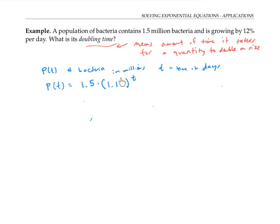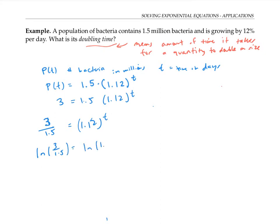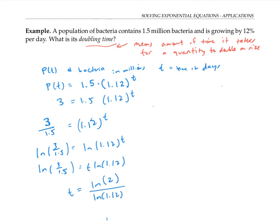Since we're looking for the doubling time, we're looking for the t value when p(t) will be twice as big. So I can set p(t) to be three and solve for t. As before, I'll start by isolating the tricky part, taking the log, bringing the t down, and finally solving for t. Three over 1.5 is two, so I can write this as ln(2) over ln(1.12). Using my calculator, that's about 6.12 days.